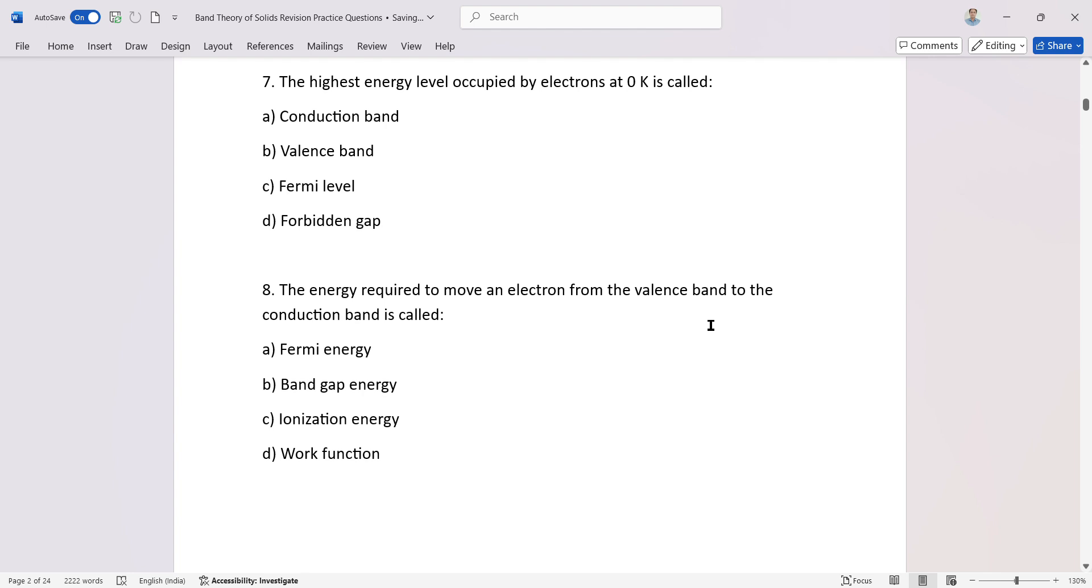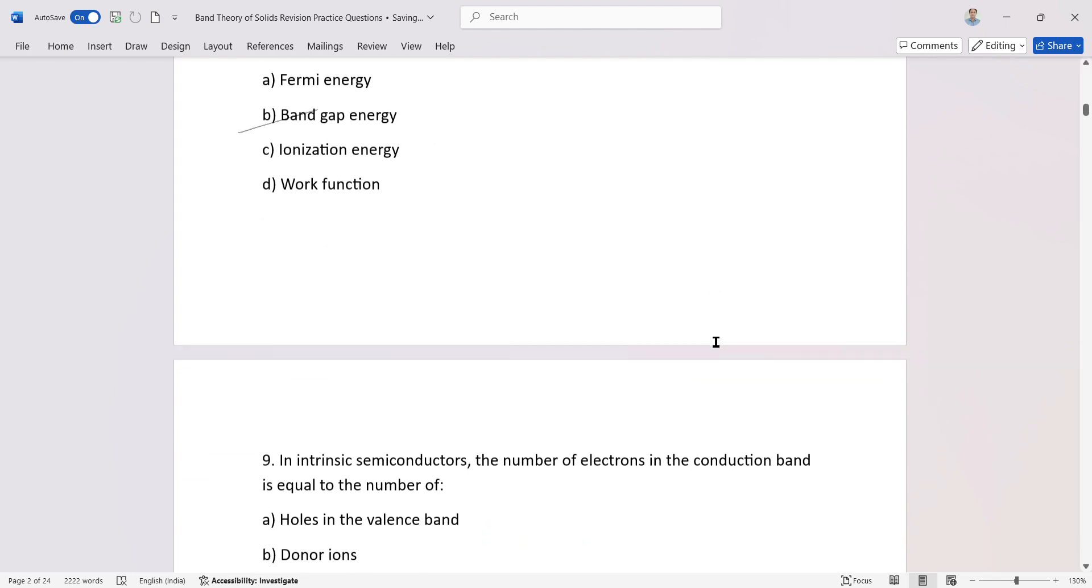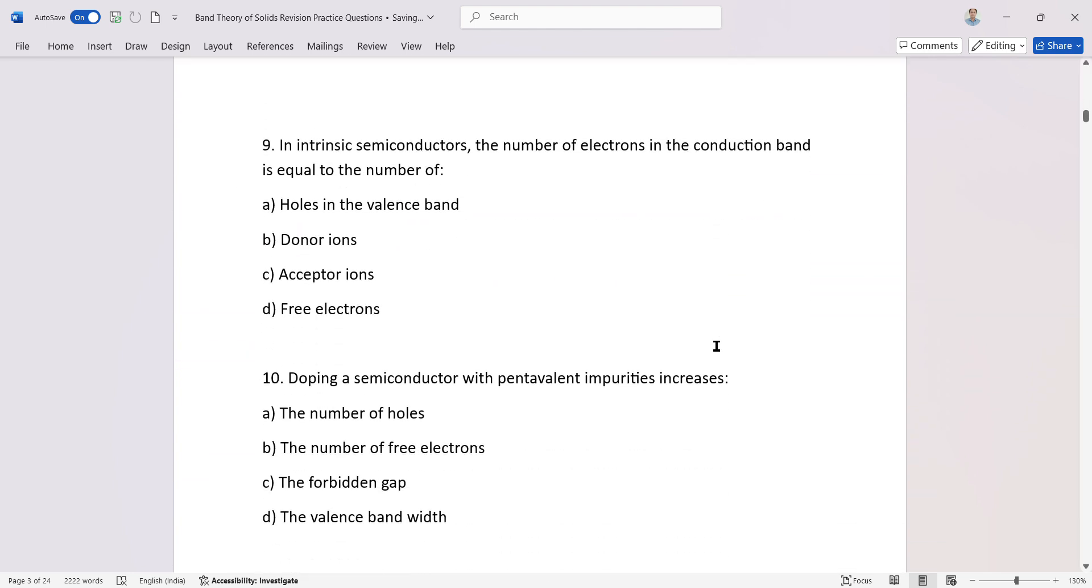The highest energy level occupied by electrons at zero Kelvin is called the Fermi level. The energy required to move an electron from the valence band to the conduction band is called band gap energy. In intrinsic semiconductors, the number of electrons in the conduction band is equal to the number of holes.